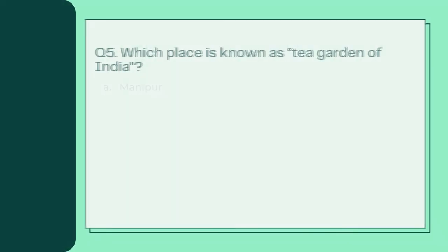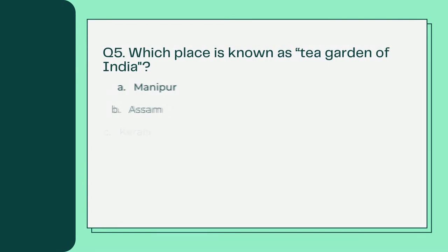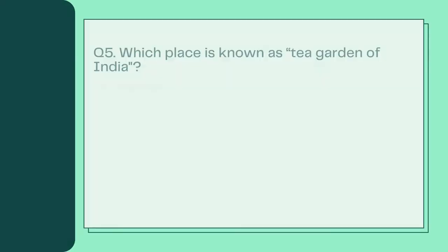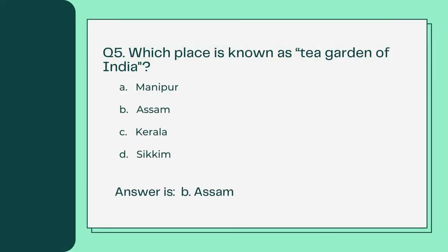Which place is known as the Garden of India? A. Manipur B. Assam C. Kerala D. Sikkim. Answer is B. Assam.